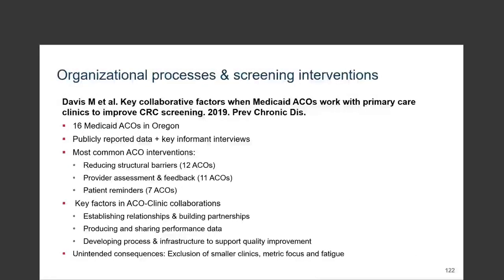As we've heard throughout the day, complexity is key. These delivery structures are getting much more complex with the growth of ACOs, patient medical homes, and other payment and related governance structures. It's so critical to think about organizational factors at different levels — for example, looking at both clinic-level and ACO-level characteristics. This is a nice study that Melinda Davis and her team at OHSU did, using a comparative case study of 16 Medicaid ACOs to understand the ACO-clinic partnership and how ACOs were working with clinics to improve colorectal cancer screening practices.